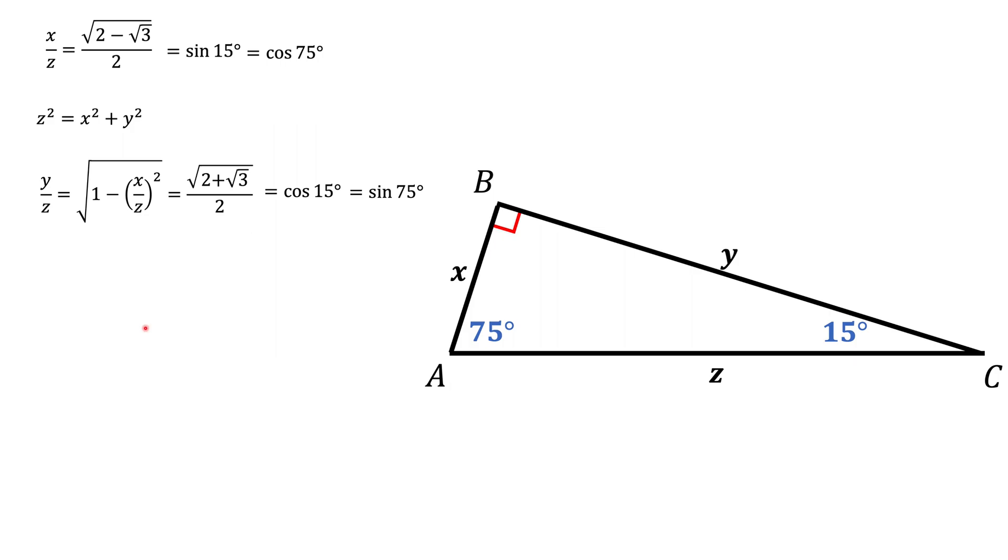We can also find the ratio of x over y by dividing this and this. That's what we're going to get. And that is also a trigonometric function. For angle of 15 degrees, it's a ratio of the opposite leg to the adjacent leg. And that is tangent. For the angle of 75 degrees, it's the ratio of the adjacent leg to the opposite leg. And that is cotangent.